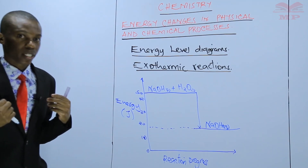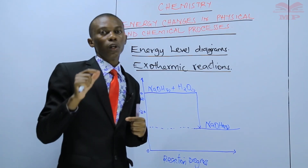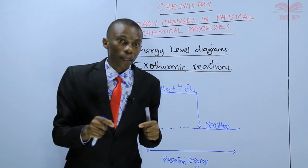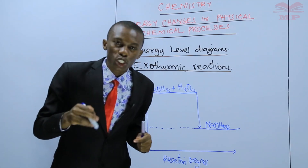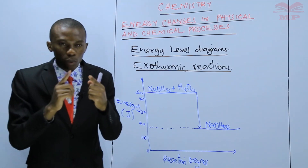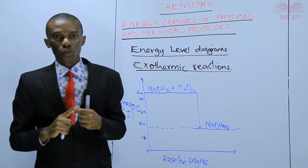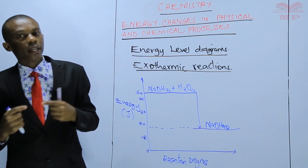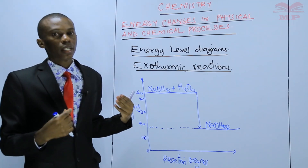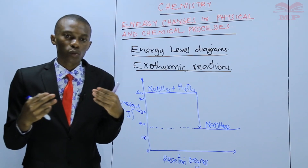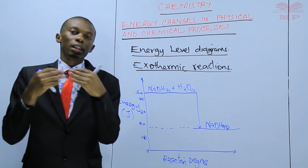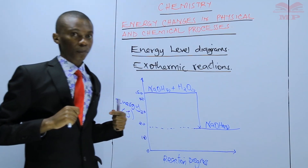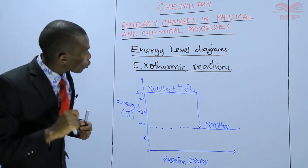Therefore, there is loss of energy to the surrounding. This is the energy that was lost when we did this illustration — dissolving sodium hydroxide solid, mixing it with water and stirring it. You stir the mixture using a thermometer, and when you record the temperature of the resulting solution, you find it is higher than the temperature of the distilled water measured initially. This shows there is loss of heat to the surrounding.